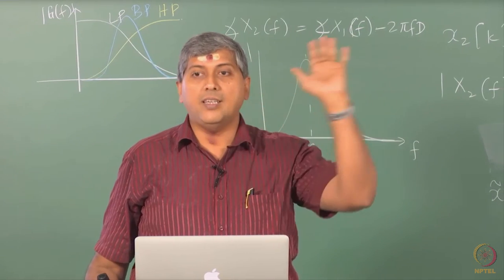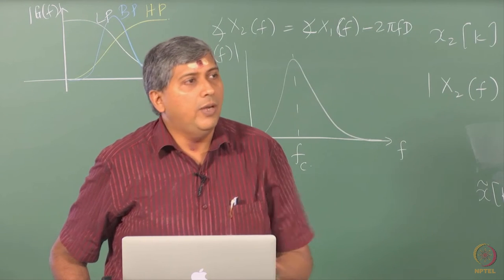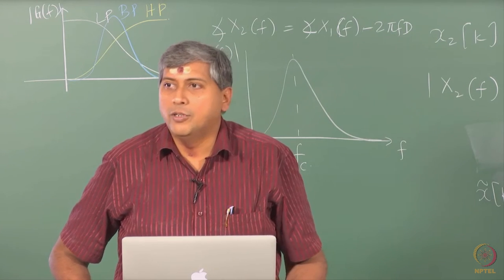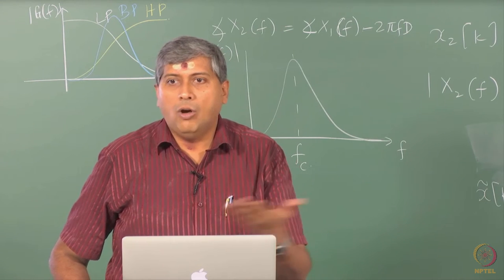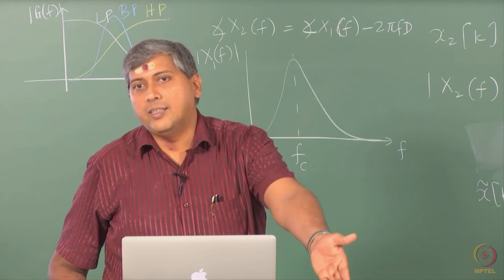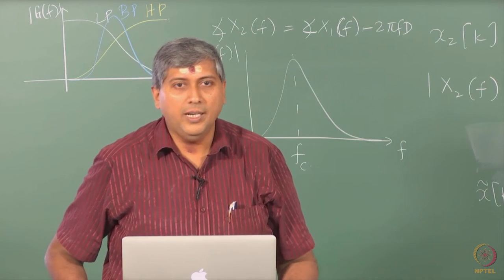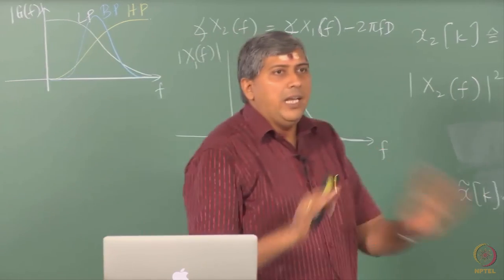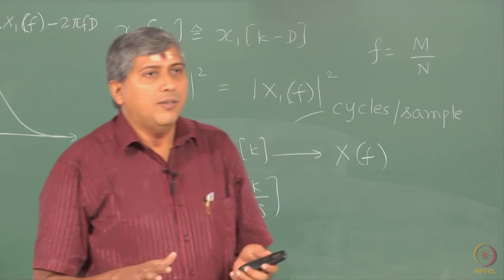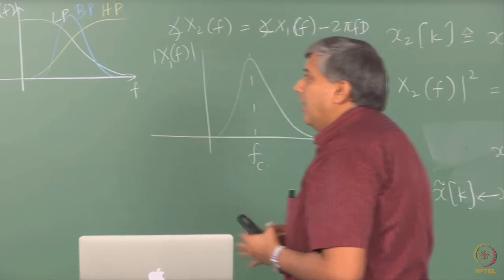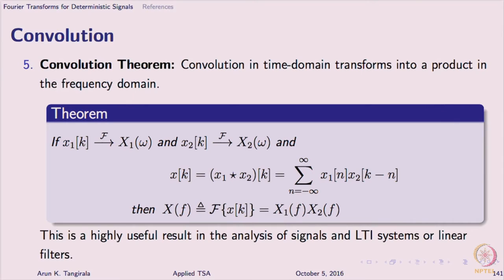This property specifically says: if I convolve two signals in time domain — where do I run into convolution operations? In all linear time invariant systems, when I excite the system with an input, it is actually convolving the input with its impulse response and producing the output. So any linear filter, when excited by an input, performs this convolution operation. And this property tells me that in the frequency domain, what is happening is a product operation. Convolution in time domain translates to product in frequency domain.